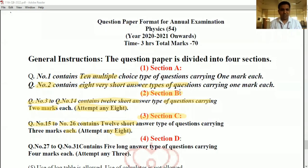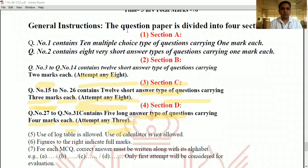Now, in the last section is section D. So now see in section D, question number 27 to 31. That means there will be total five questions, 27 to 31. And you have to attempt any three, each carry four marks. That means you will get 12 marks.